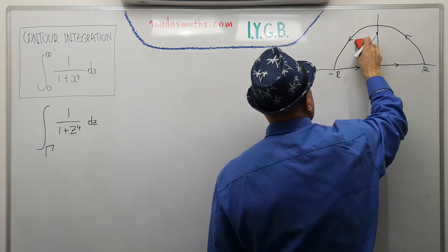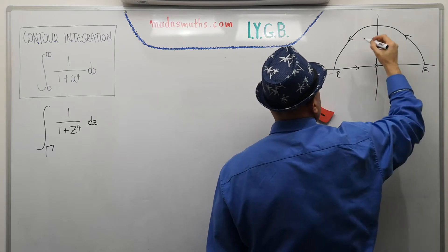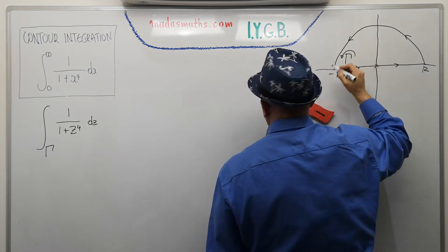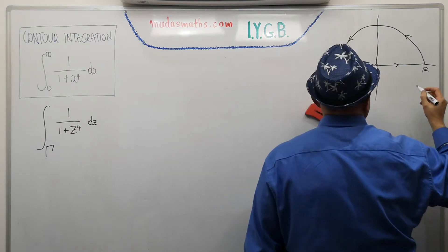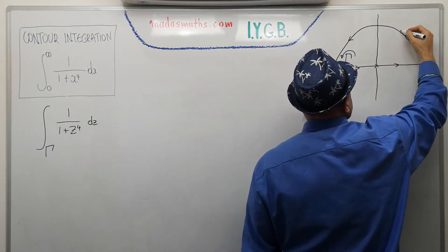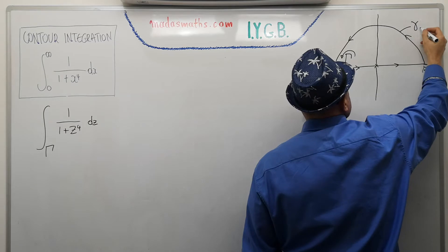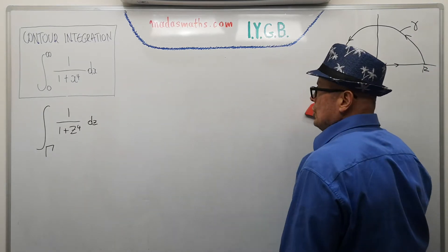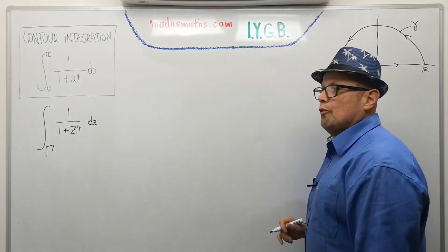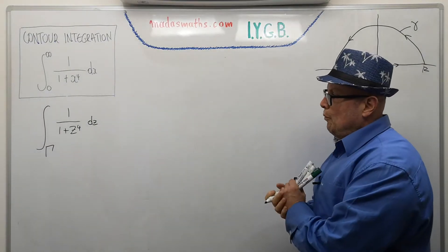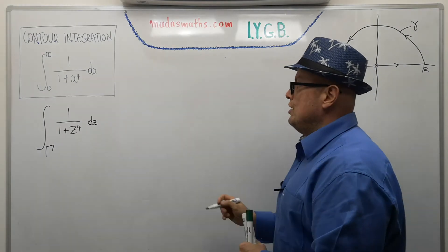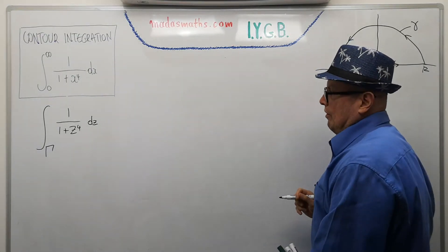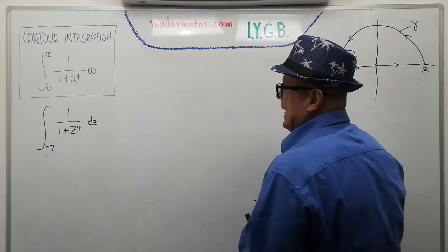I noticed something on the denominator, so I'm going to place gamma here. Let's label the curved semicircular part as little gamma. This is our contour. The next thing, of course, we're going to use the residue theorem, so we really need to find the residues of this function f(z) which lie inside gamma.